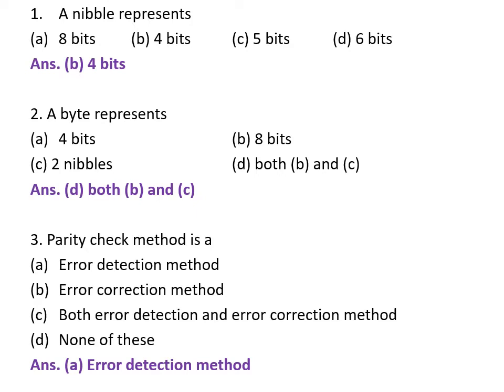Second question is: A byte represents A. 4 bits, B. 8 bits, C. 2 nibbles, D. Both B and C, that is 8 bits and 2 nibbles. And the correct answer is D. That is, a byte represents both 8 bits and 2 nibbles.